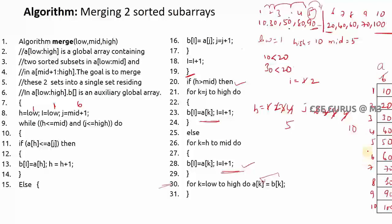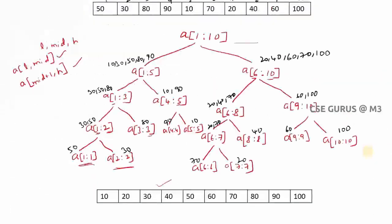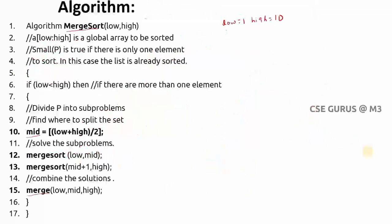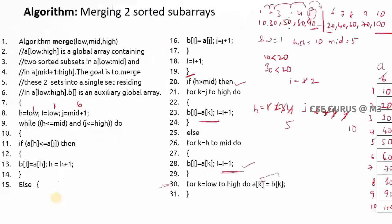Since b is an auxiliary array and our original array is a, we copy all elements from b back to a: for k = low to high, a[k] = b[k]. Now array a also contains the elements in sorted order. This is the complete concept of merge sort — divide elements into two sets recursively until the problem is small, sort each subset, then merge using the auxiliary array by comparing elements and placing the smaller one first, and finally copy results back to the original array.